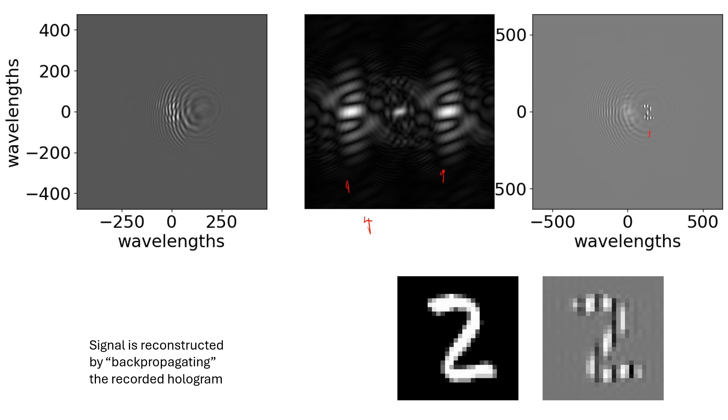And then we can take the reconstructed object field and propagate it minus d to recover an image of the original object. So in the Jupyter notebook, we have the recorded hologram, the Fourier transform of the hologram minus the reference with the signal terms. We propagate back and we recover the object. Here, the object is modulated by a carrier frequency because of the carrier frequency riding on the reference beam. So the object is propagating at an angle. The original object is the number two, and the reconstructed object has that amplitude modulation.